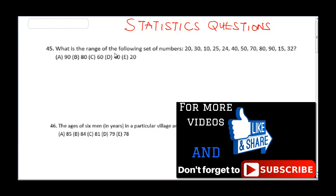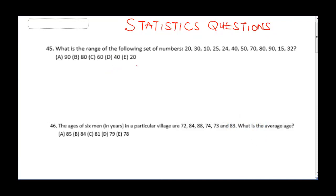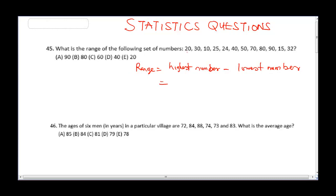The first question asks: what is the range of the following set of numbers? If you followed part one of this video, you will recall that range equals the highest number minus the lowest number. Looking at the set — 20, 30, 10, 25, 24, 40, 50, 70, 80, 90 — the highest number is 90 and the lowest is 10. So the range is 90 minus 10, which gives us 80. The correct answer is B.